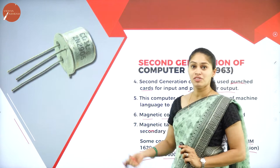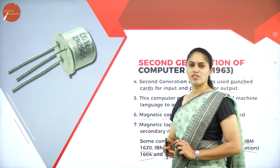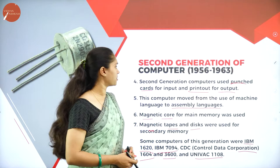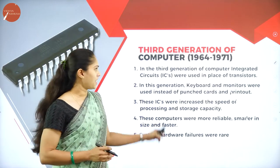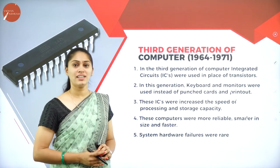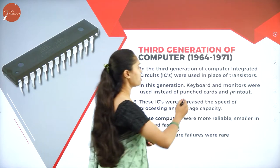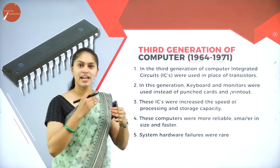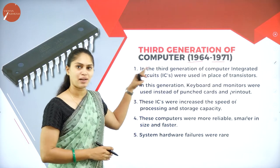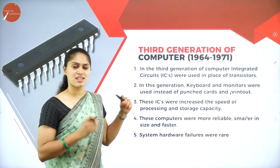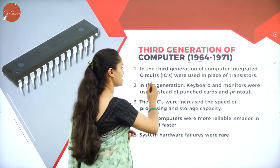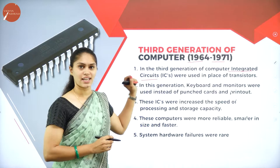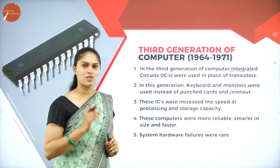Here you can see the image of a transistor, which was the main basic component of second generation computers. Now moving to the third generation of computers, the duration was between 1964 and 1971. Instead of transistors, the basic component was changed to IC, that is integrated circuit.